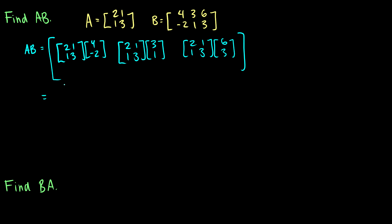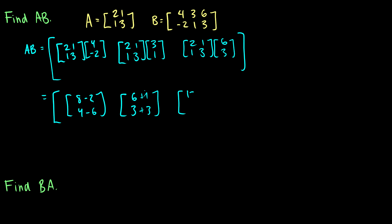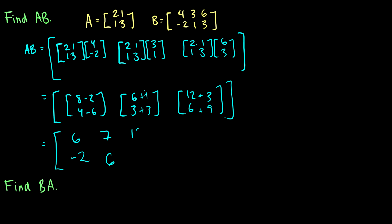Now we can do it with a quick method. [2,1; 1,3] times [4, -2]: that's 4 of the first column minus 2 of the second column, giving us the intermediate results. The second entry uses [3, 1], and the last uses [6, 3] — that's 6 of the first column giving [12, 6], plus 3 of the second column giving [3, 9]. Our result is [6, -2; 7, 6; 15, 15].